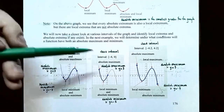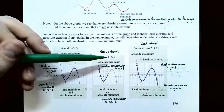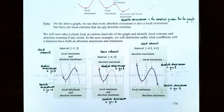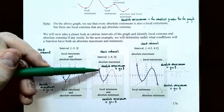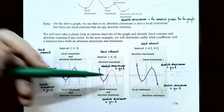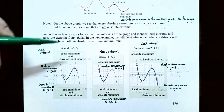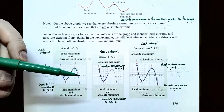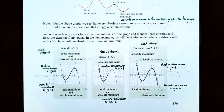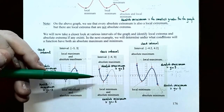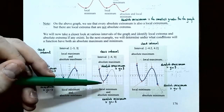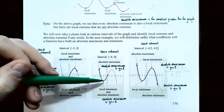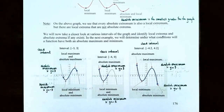On the closed interval from x equals negative 4 to x equals 0, we're looking at a different portion of the graph. The absolute maximum occurs at the endpoint x equals negative 4, with a y value of 3. The absolute minimum still occurs at x equals negative 2 with y equals negative 3 — demonstrating that just because the absolute maximum is at an endpoint doesn't mean the absolute minimum will be as well.